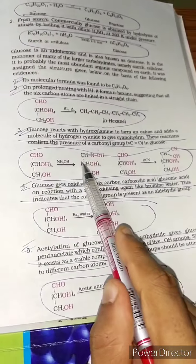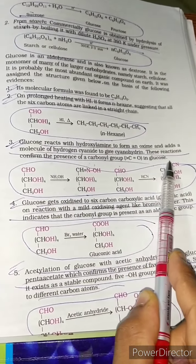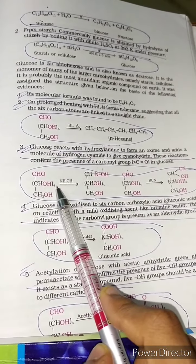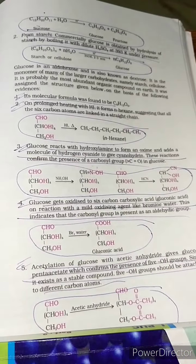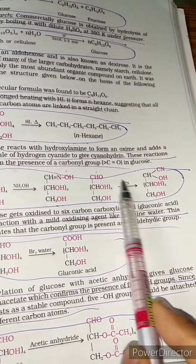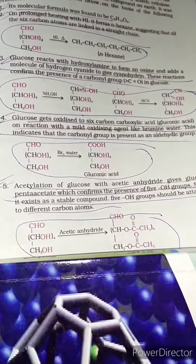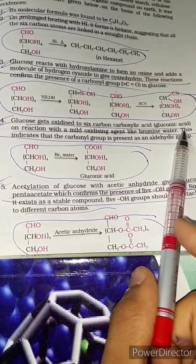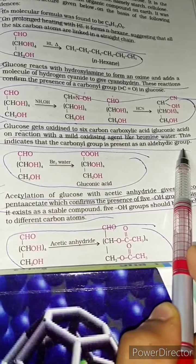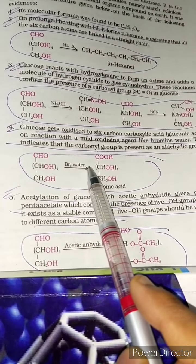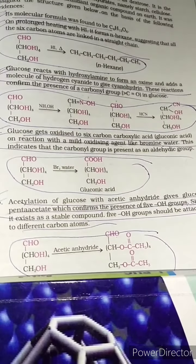Glucose reacts with hydroxylamine to form an oxime and adds a molecule of hydrogen cyanide to give cyanohydrin — both reactions confirm the presence of a carbonyl group in glucose. Additionally, glucose gets oxidized to a six-carbon carboxylic acid, gluconic acid, on reaction with mild oxidizing agent bromine water, indicating the carbonyl group is present as an aldehydic group.